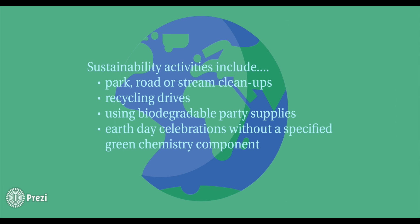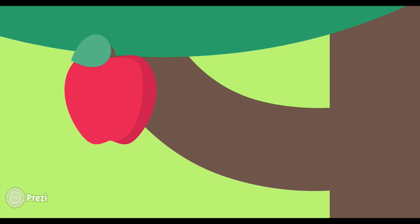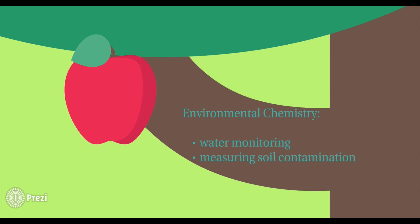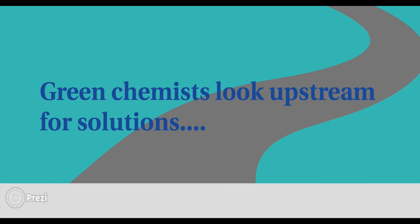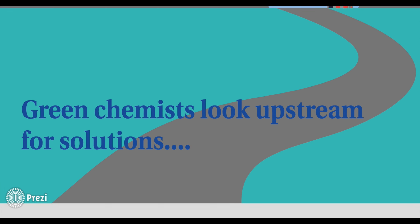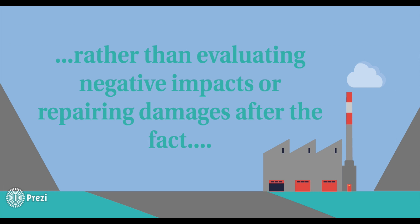Things like Earth Day celebrations without a specified green chemistry component are also ineligible. Environmental chemistry is a fine line — activities like measuring pollutants in soil or water don't count as green chemistry. Remember that green chemists look upstream for solutions. Rather than attempting to evaluate negative impacts or repair damages after the fact, they look for alternatives to existing designs and innovate to enable sustainability.